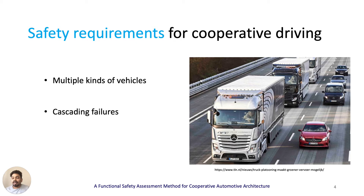Cooperative systems are heterogeneous, with multiple types of vehicles — for example, cars and trucks from different manufacturers — and infrastructure like traffic lights. All participating entities have their own architecture and form a cooperative architecture together. A major challenge in eliciting safety requirements in such systems is that failure in one system can cascade to other cooperating vehicles. Another challenge is how to handle the complexity of systems of systems. Our solution is to identify safety requirements for the entire cooperating system and allocate them to the individual functional components within each system.